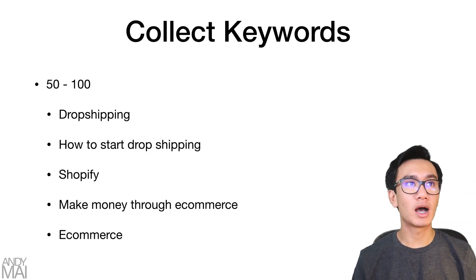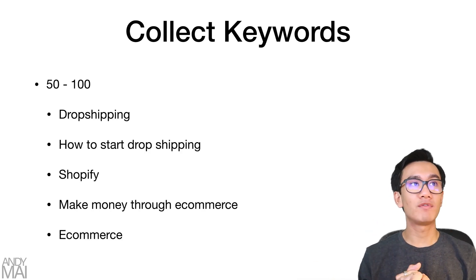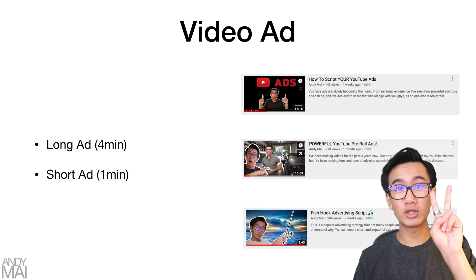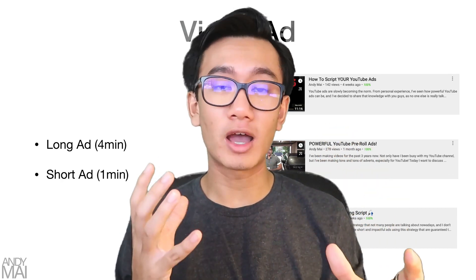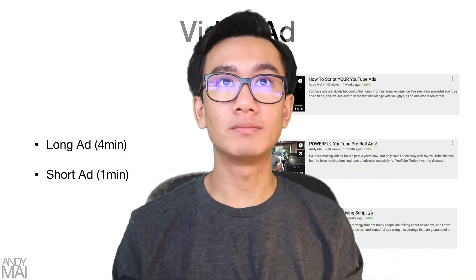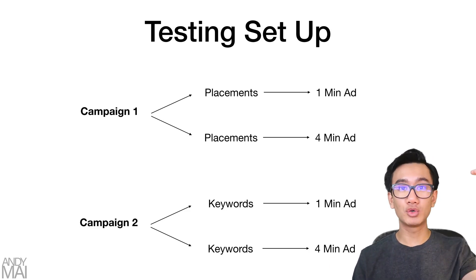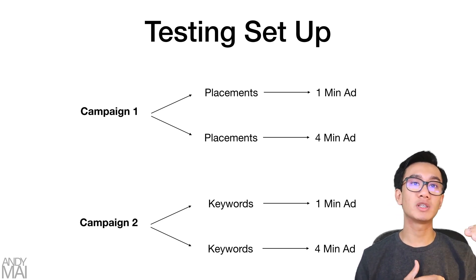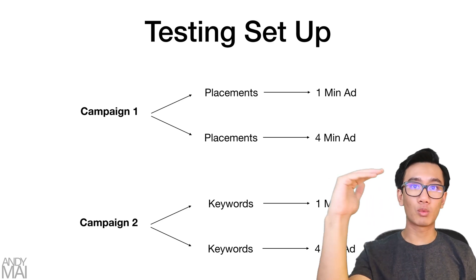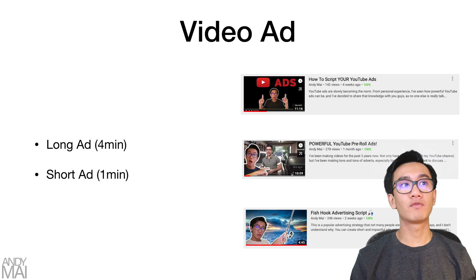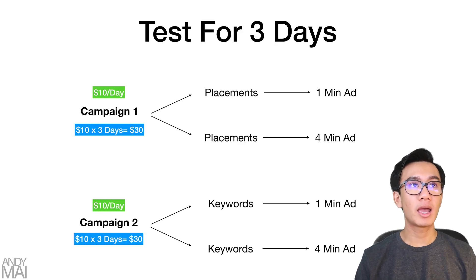Then collect 50 to 100 keywords — they're just as powerful as placements but give different results. Create two different ads: one short and one long, to split test which performs better. Campaign settings: cost per view at 10 cents. Set up two campaigns — one for placements, one for keywords — and within each, two ad groups: one for the one-minute ad and one for the four-minute ad.